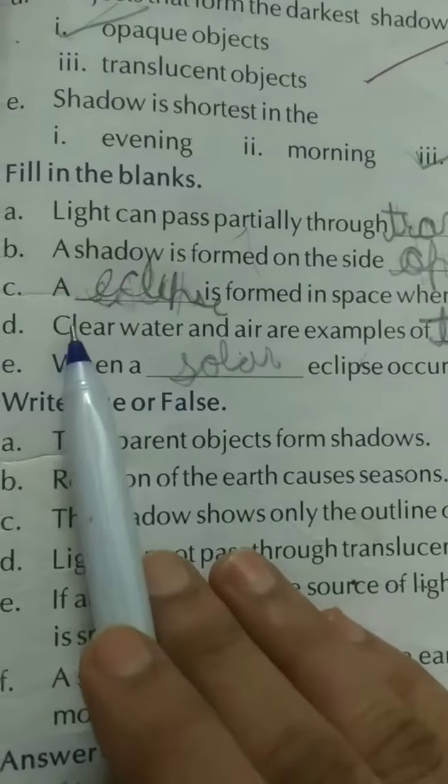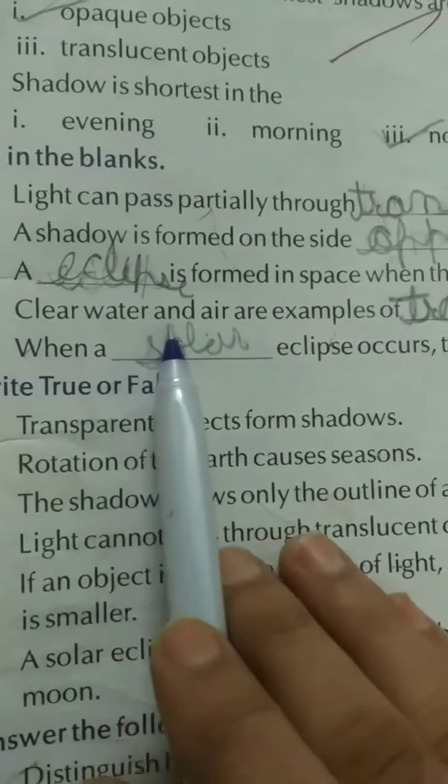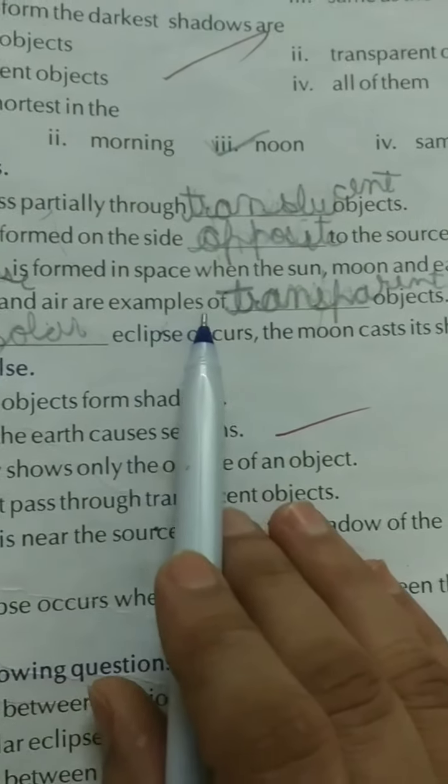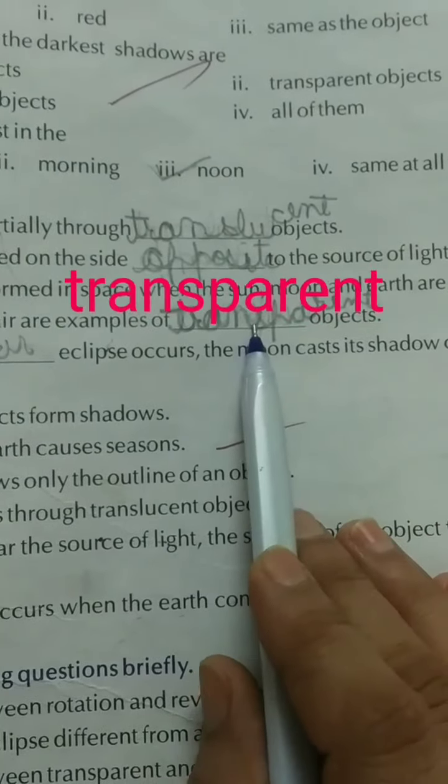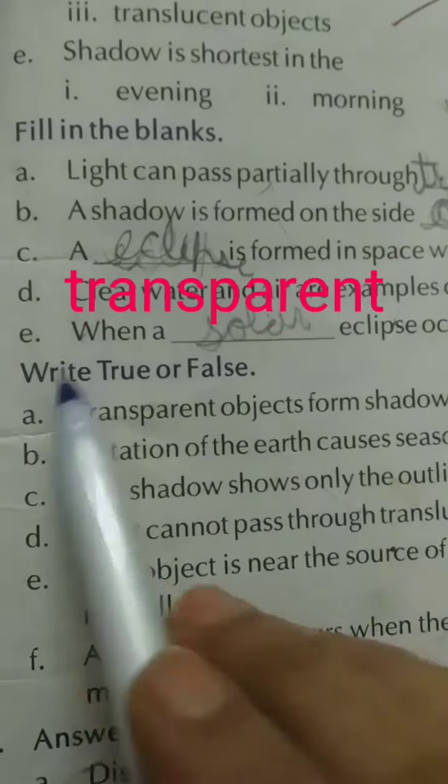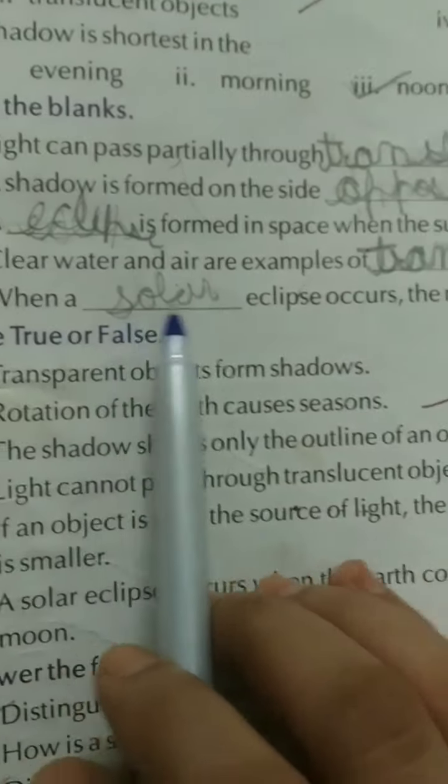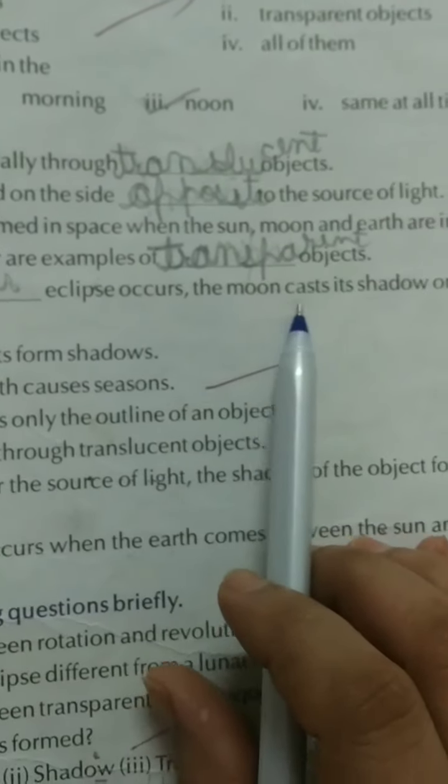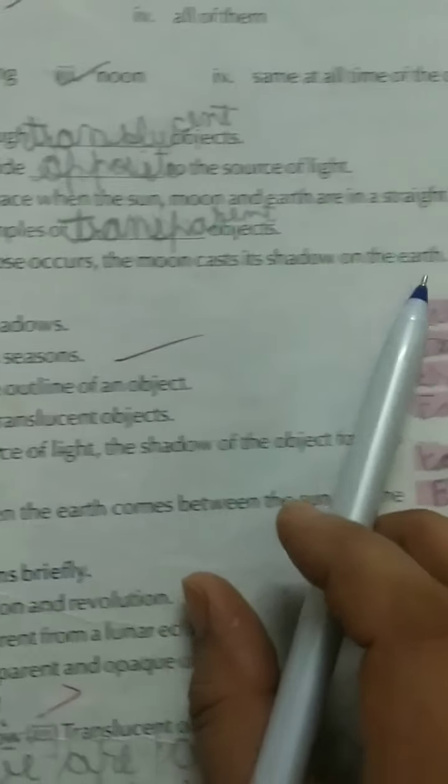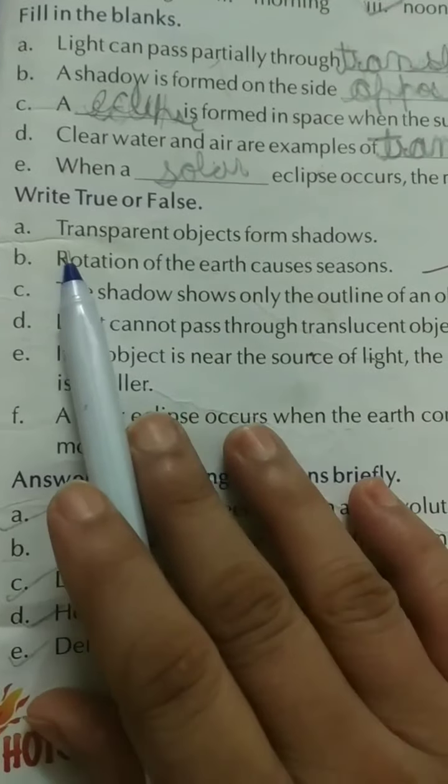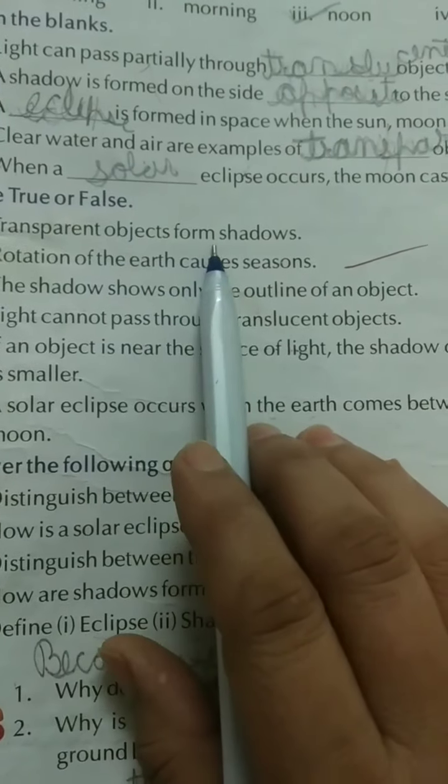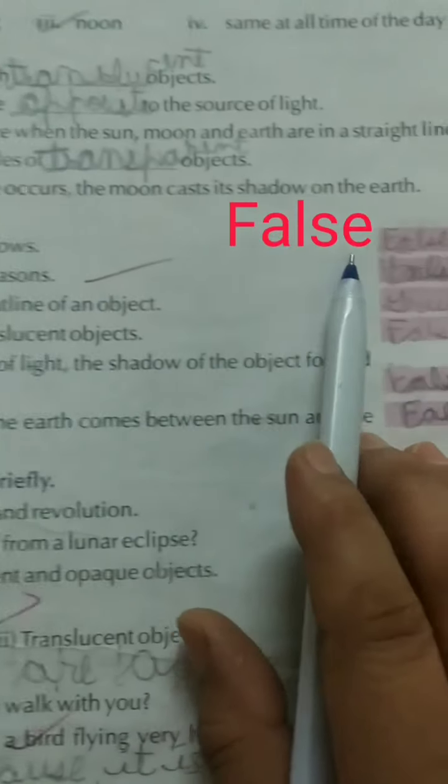Part D: Clear water and air are example of transparent object. Part E: When a solar eclipse occurs, the moon cast its shadow on the earth. True false. Part A: Transparent objects form shadow. It is false.